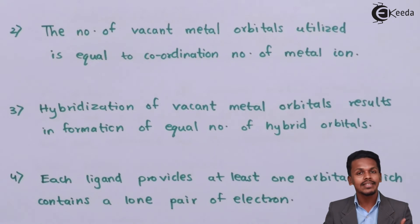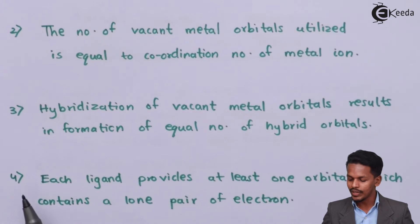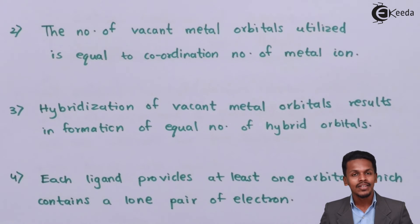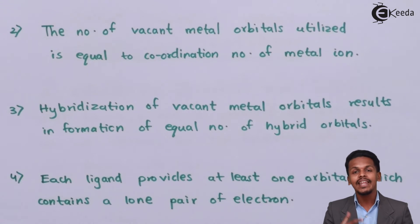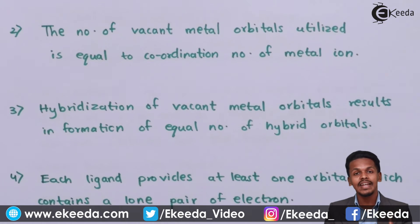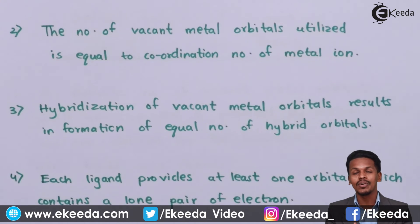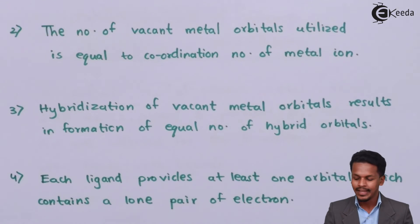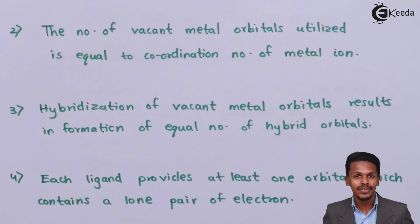The fourth point: each ligand provides at least one orbital which contains a lone pair of electrons. Ligands can be of various types — monodentate, bidentate, tridentate — but each ligand provides at least one lone pair of electrons directed towards the metal, forming a bond between the metal and the ligand.